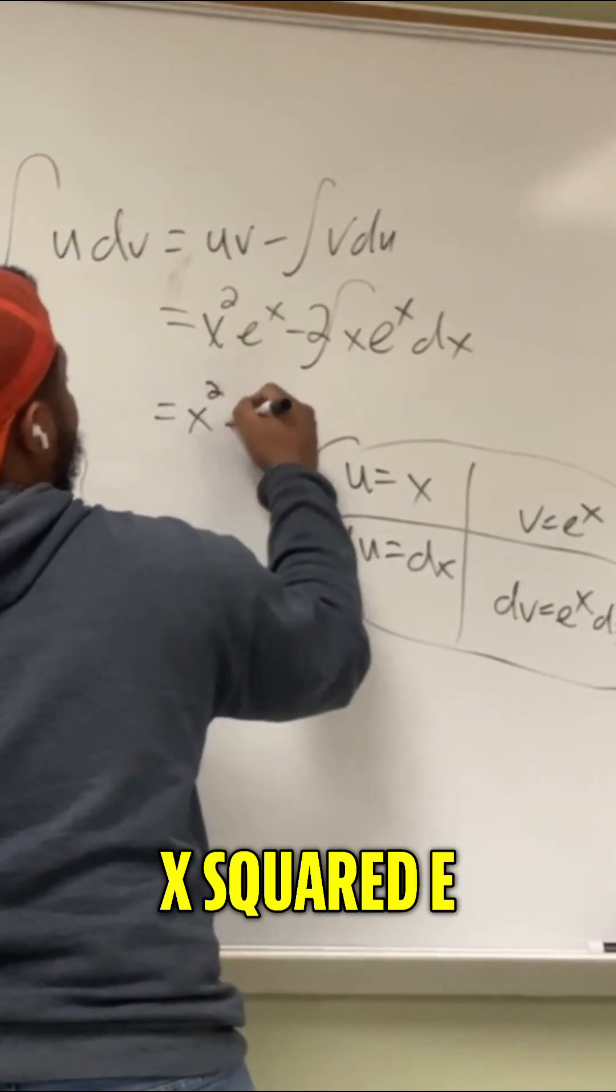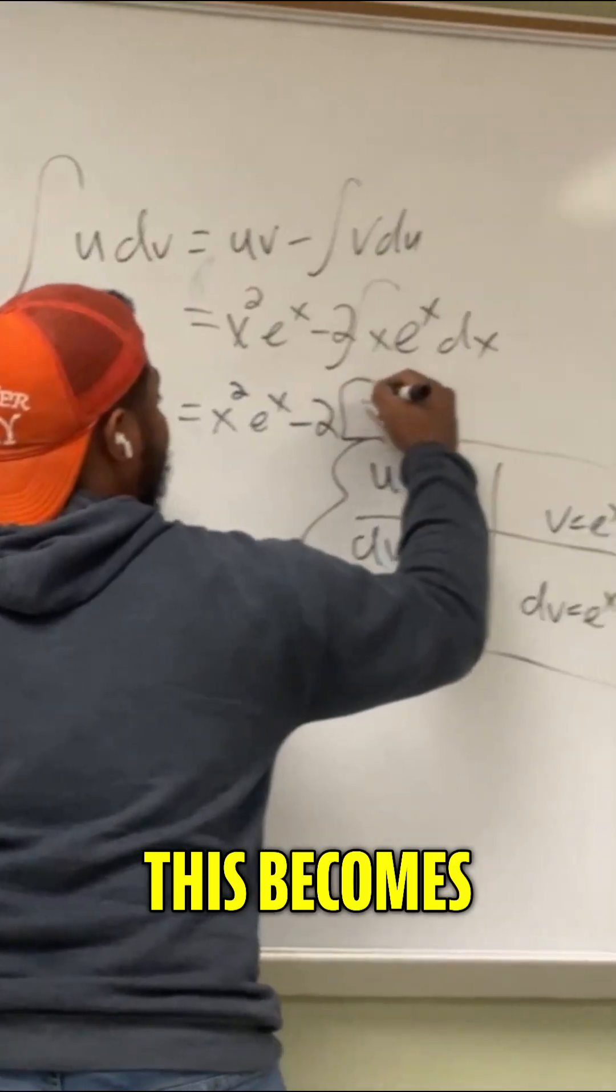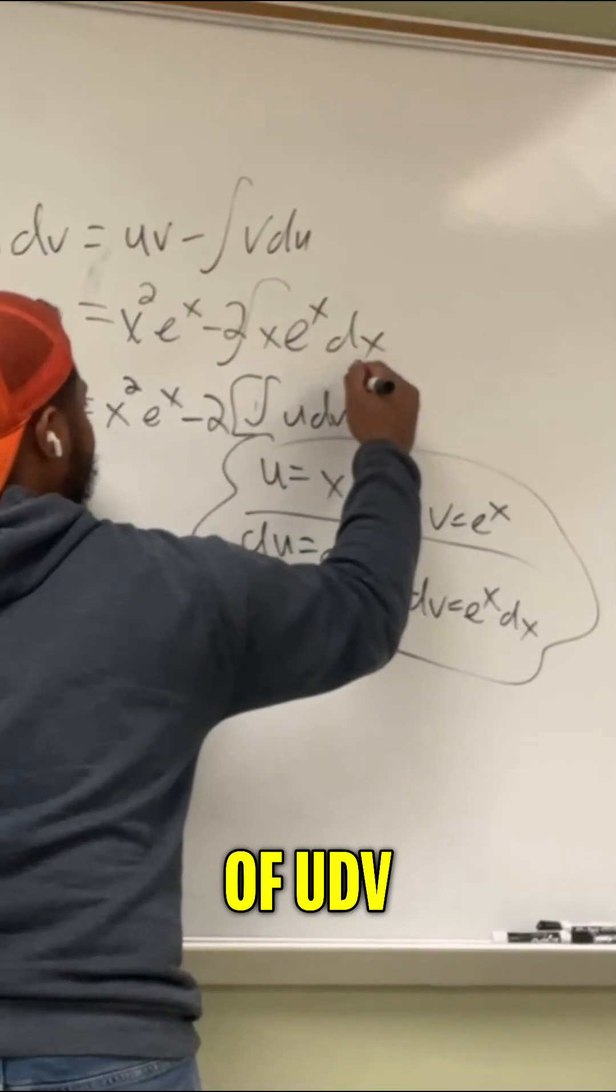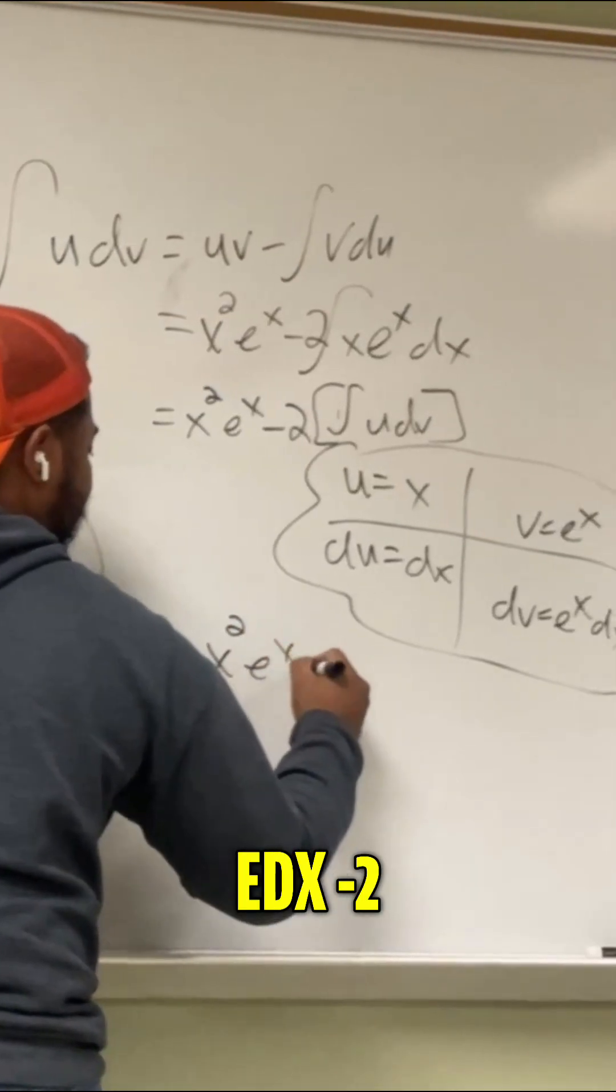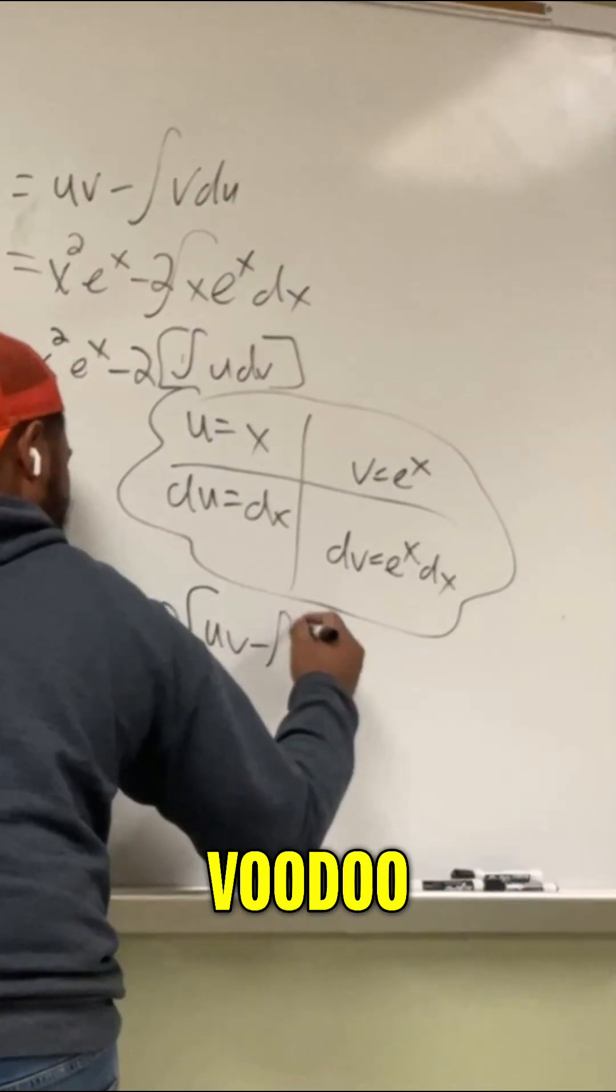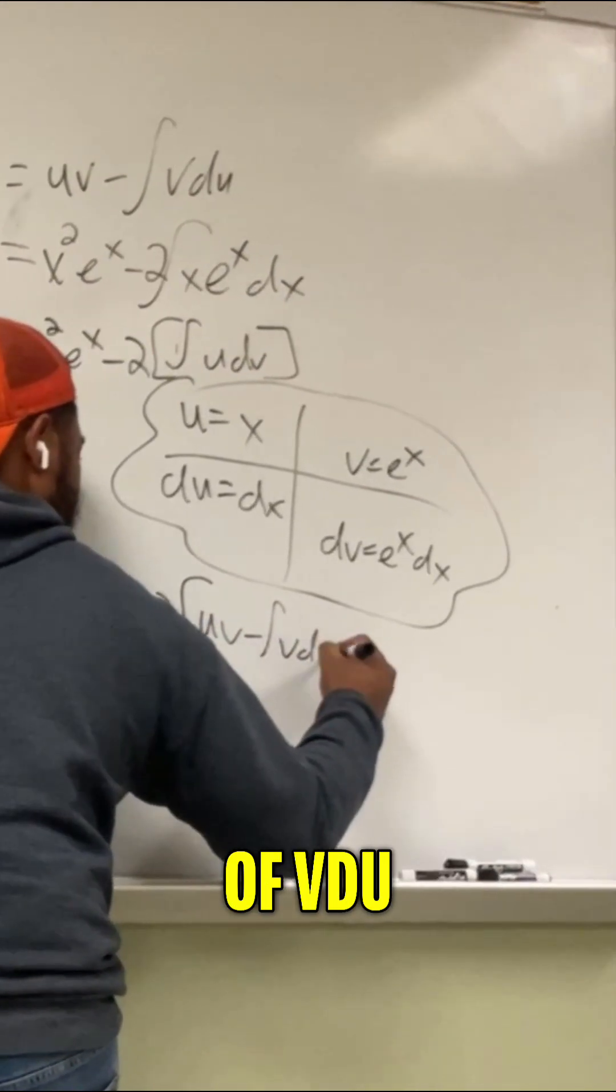So plugging those in, we get this is x squared e to the x minus 2 of—this becomes now the integral of u dv. In other words, x squared e to the x minus 2 of these ultraviolet voodoo.